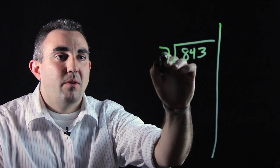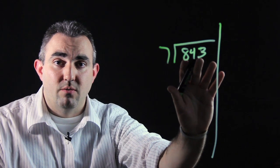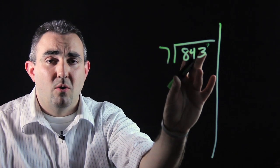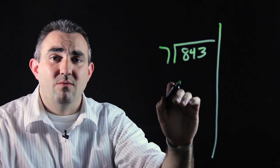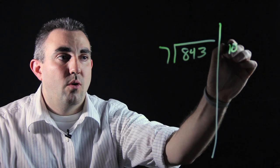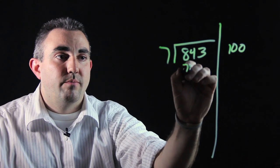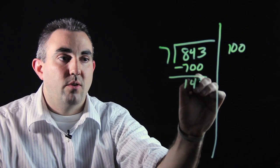So if we multiply 7 times 100, that'll give us 700, which is smaller than 843. Your object is to get something smaller. If you take 7 times 200, that's going to give you 1,400. That's too big. So you've got to multiply 7 times 100. 7 times 100, 700. Do the subtraction, 143.